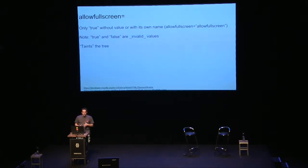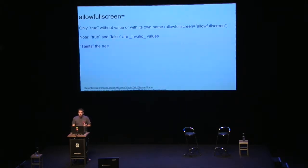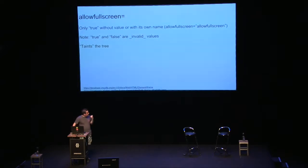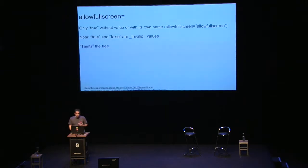There's a fullscreen API in JavaScript — an HTML5 API which allows you to request any element to be fullscreened. For iframes, however, they default to not allowing that because it's a security risk; otherwise any advertisement could do a full-screen takeover. If you explicitly want to allow the fullscreen API, you can set this attribute. It's not true/false or zero/one — the attribute either has to exist without a value or its value has to be the attribute's own keyword. It also taints the tree: if you have nested iframes and one doesn't have this keyword, none of them can use it.